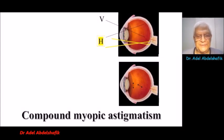Let's see another example. Suppose we have a compound myopic astigmatism. In this example, as you can see, the horizontal is myope and the vertical is higher in the degree of myopia.